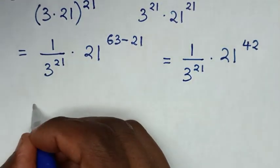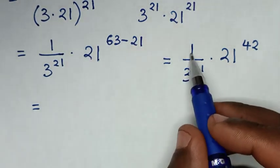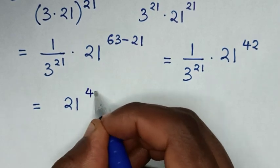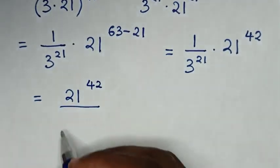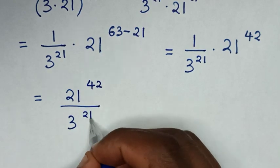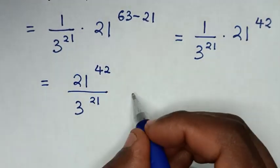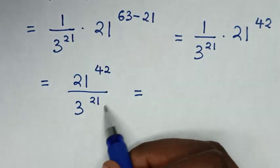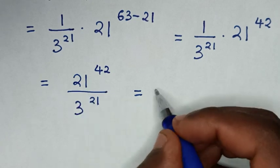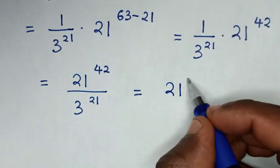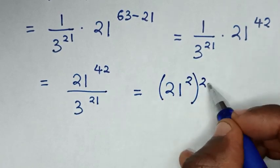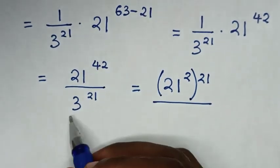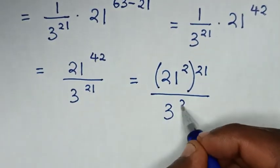Then in the next step it will be equal to: we take 1 times 21 power of 42, it will be 21 power of 42 divide by this exponent 3 power of 21. Then in the next step we make this power of 42 to have common power of 21. So 21 power of 42 is same as power of 2, then bracket power of 21 — as 2 times 21 is 42 — then over this exponent 3 power of 21.